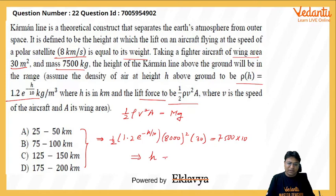Now solving for h, the value of h is approximately 96.4 km. And therefore, the closest option will be option B.